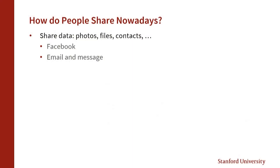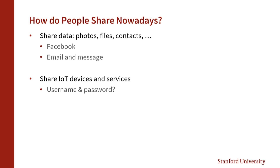So how do people share data? If we're talking about actual data like photos, files, contacts, the obvious solution people go to is Facebook. Or if they care, maybe email and messaging. But what about IoT devices? What about services like bank accounts? Are we going to share the username and password and give out full access? What about devices like Nest that are tied to your Google account — are you going to give out the whole Google email and password to share the data?